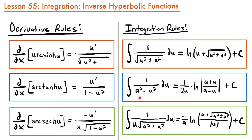Here are the three integration rules we will use for functions that lead to inverse hyperbolic functions. The answers are written in logarithmic form. Our first rule says the integral of 1 divided by the square root of u squared plus or minus a squared du equals the natural log of u plus the square root of u squared plus or minus a squared plus c. The plus or minus in the solution depends on the plus or minus in the function being integrated — those two signs must match.